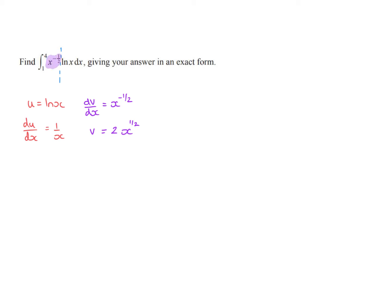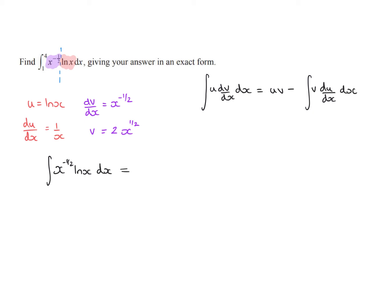This portion here was our dv by dx, and this portion here was our u. So our integration by parts formula tells us that the integral of u multiplied by dv by dx dx is equal to uv minus the integral of v du by dx. Now, this integral has limits as well, so I will deal with those at the end. I'm going to think of it as an indefinite integral first of all.